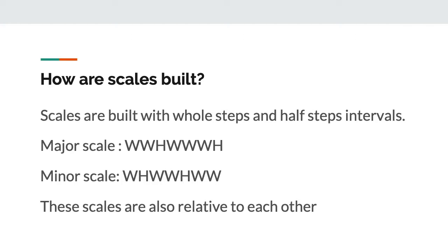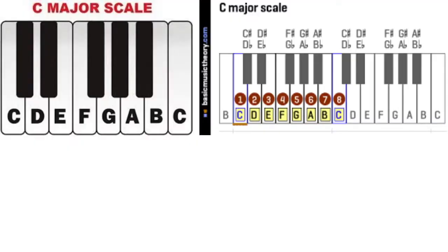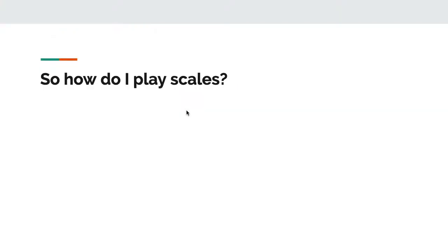So that's the C major scale as an example. A whole step is two half steps. C — whole step — D — whole step — E. Then E to F is a half step because there's no black key between them. Then whole step, whole step, whole step, half step — and that gives you the full scale.